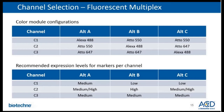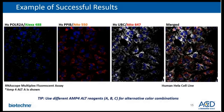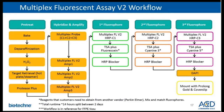This table summarizes our recommendation on how to assign probe channels based on target expression level. Here is an example of successful staining using positive control probe and fluorescent multiplex assay. This slide shows the V2 assay workflow. With an FFPE sample, you will need to perform the heat-mediated target retrieval step, followed by protease treatment, in order to allow the probe to penetrate into the cell and hybridize to the target sequence.